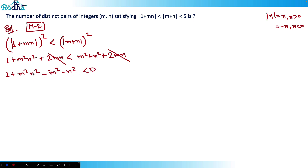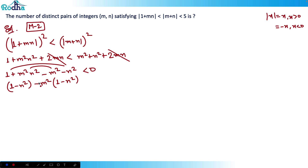After cancelling 2mn from both sides, we get: 1 + m²n² - m² - n² < 0. Now I can factor this. Combining 1 and -n² gives (1 - n²), and combining m²n² and -m² gives -m²(1 - n²). So factoring: (1 - m²)(1 - n²) < 0.